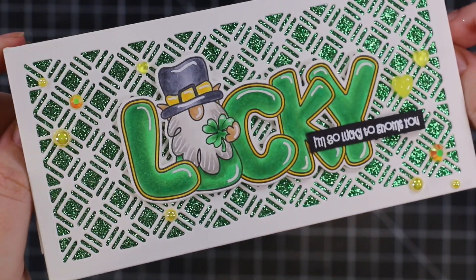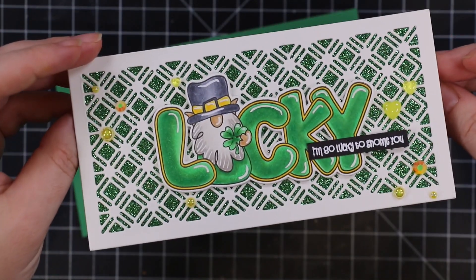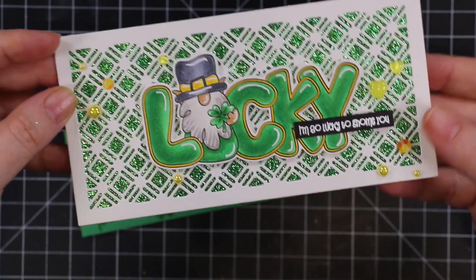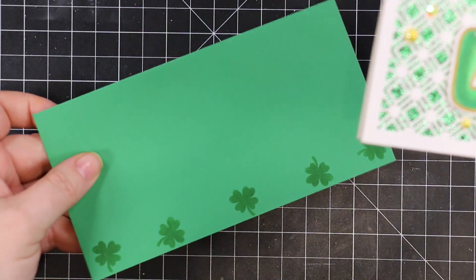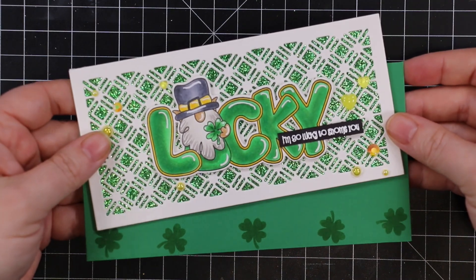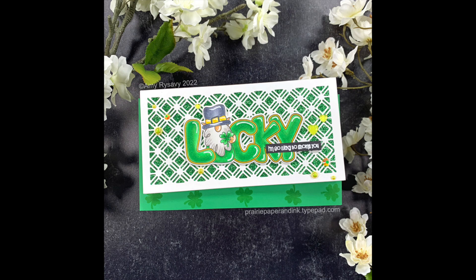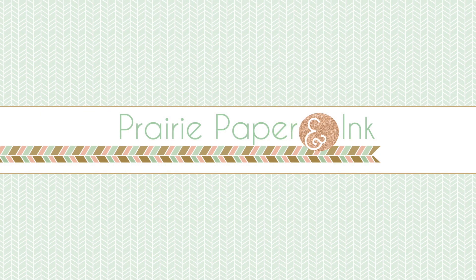Once those are adhered, this card is complete with all its glitter and bling and cute little gnome. I love how the glitter peeks through that die-cut background. I'll have a link below the video to my blog post with all the supplies I used. Thank you all so much for watching, subscribing, and commenting. I'll see you all very soon in the next video!